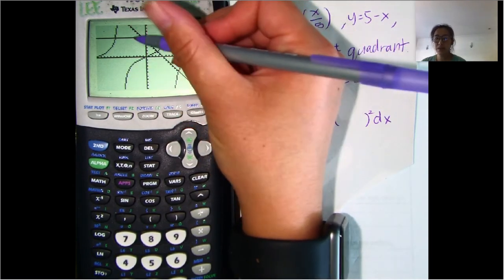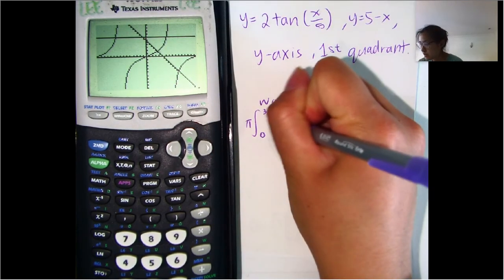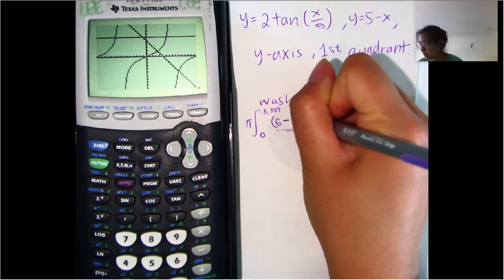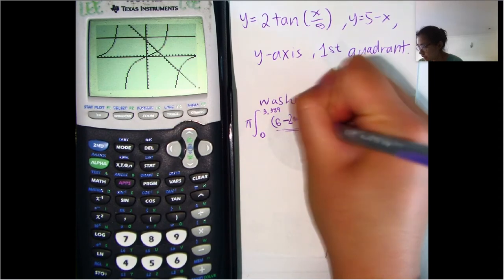So to find the difference between those, you just do top minus bottom. So we do 6 minus, and then I wrote a little bit too small here, but 2 tangent of X over 5.